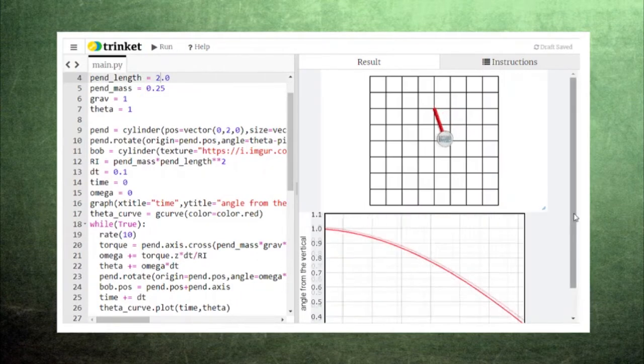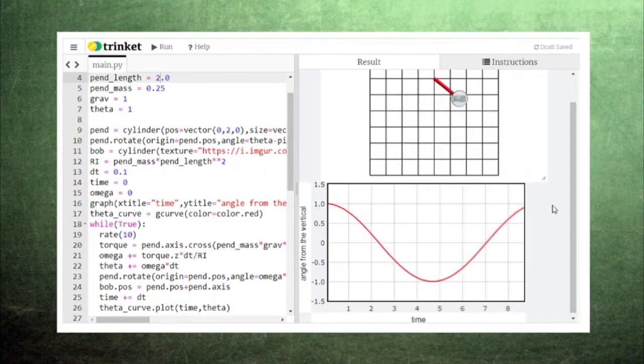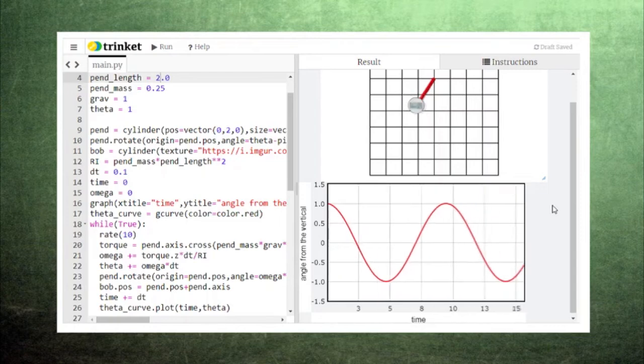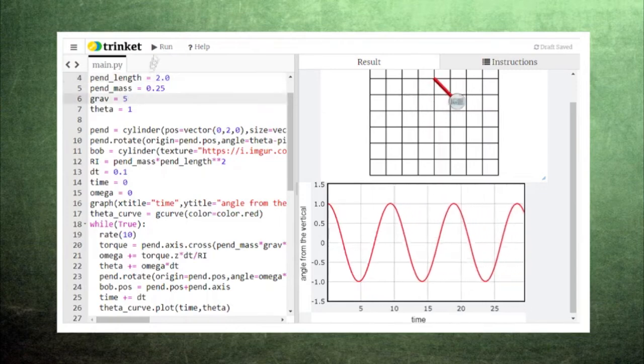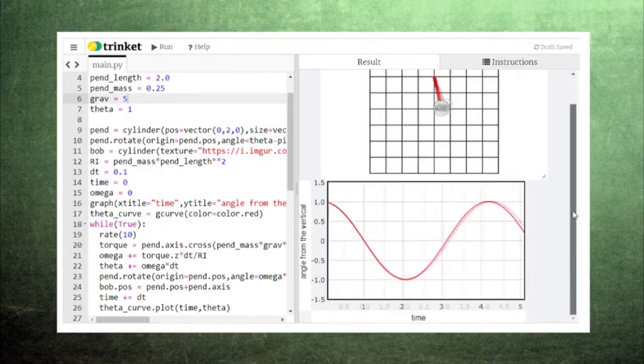On the other hand, changing the pendulum's length makes a notable difference in the oscillation's frequency. You can also change the strength of the gravitational field, which also changes the oscillation's frequency.